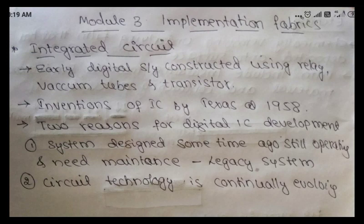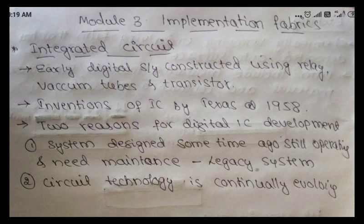First, we discuss about integrated circuits. Early digital systems were constructed using relays and vacuum tubes and some transistors. To complete the circuit we need cost reduction, as relays and transistors are high cost, so inventions were made to reduce the cost of integrated circuits.